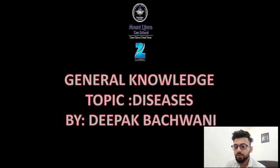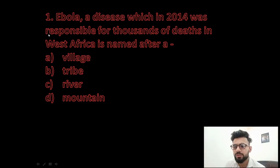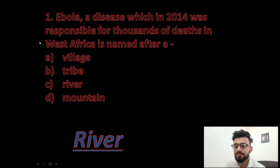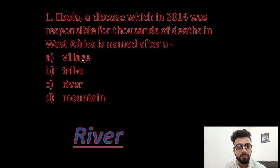The first question: Ebola, a disease which in 2014 was responsible for thousands of deaths in western Africa, is named after a village, triad, river, or mountain? The answer to this question is river — Ebola is a river, and this disease is named after that river.